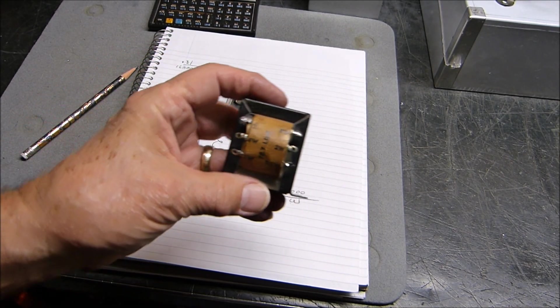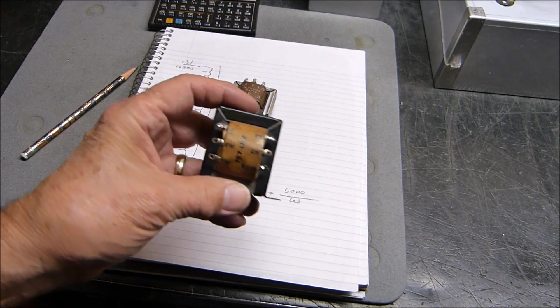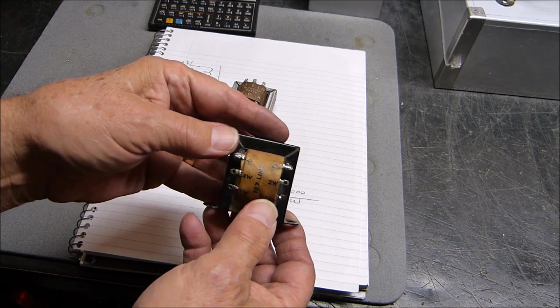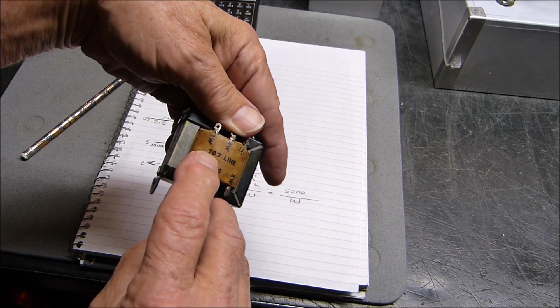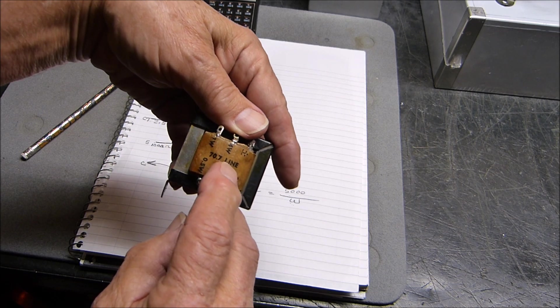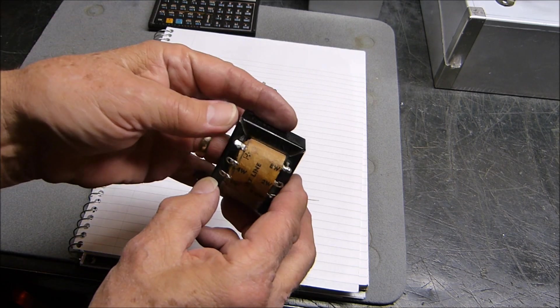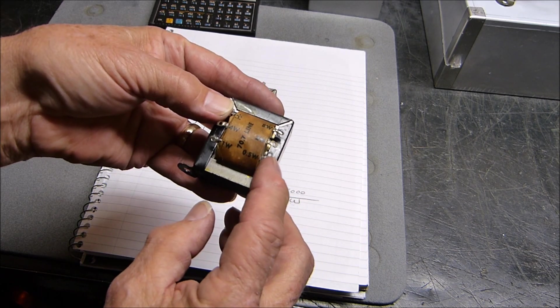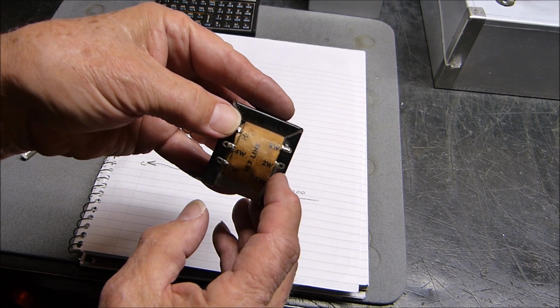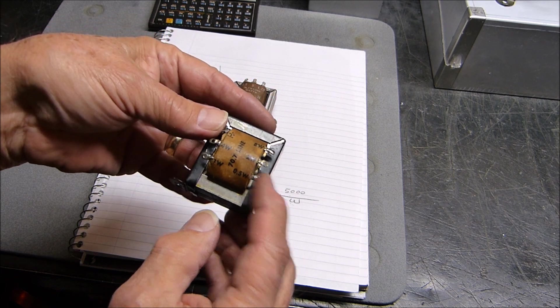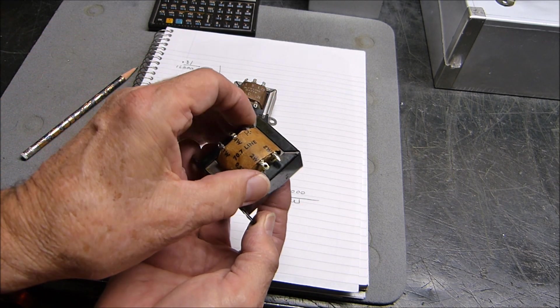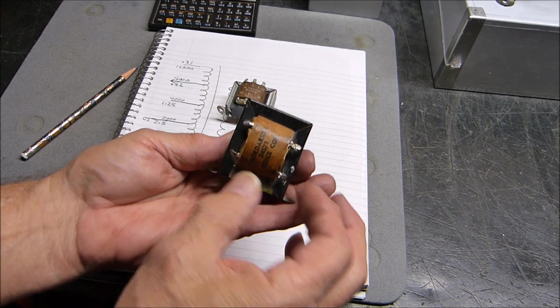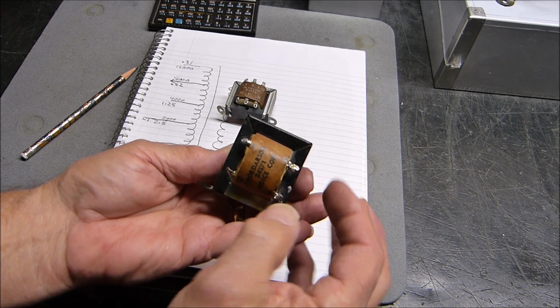Here's the part that I never thought about until recently. What this is telling us is if we put a 70.7 volt RMS signal between the common (they label it plus and minus) and, for example, the 0.5 tap, what we're going to get out the other side between common and four, eight, or 16 ohms.